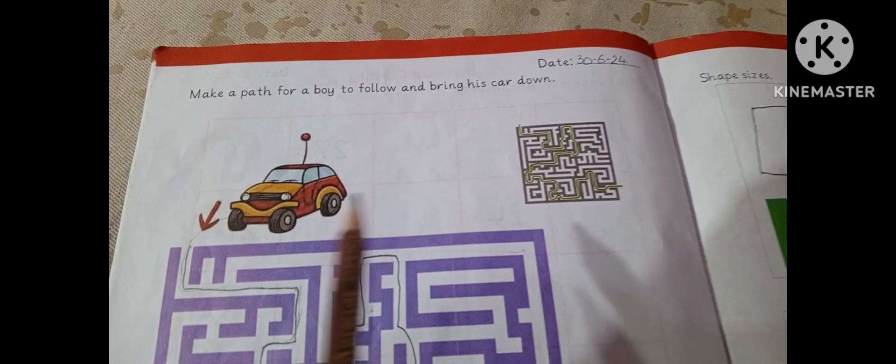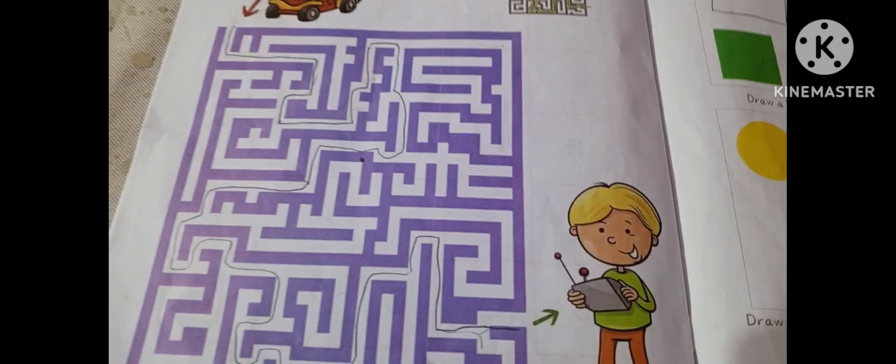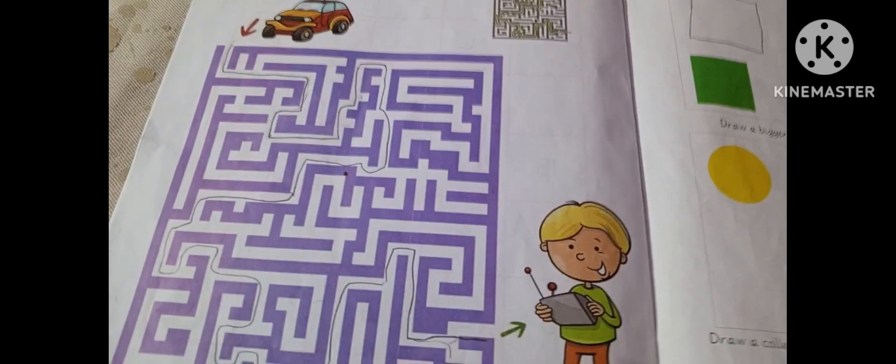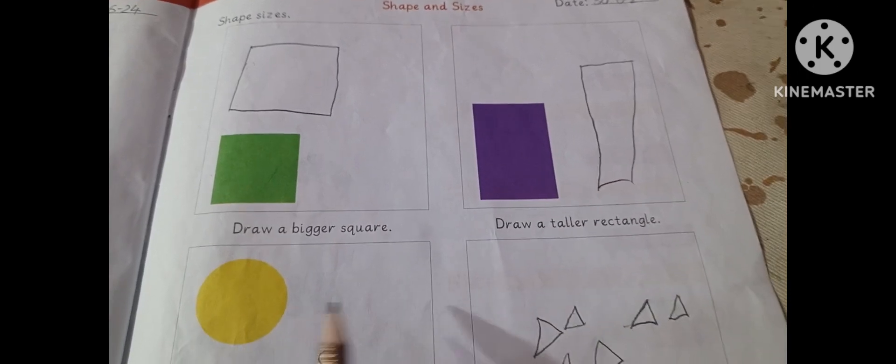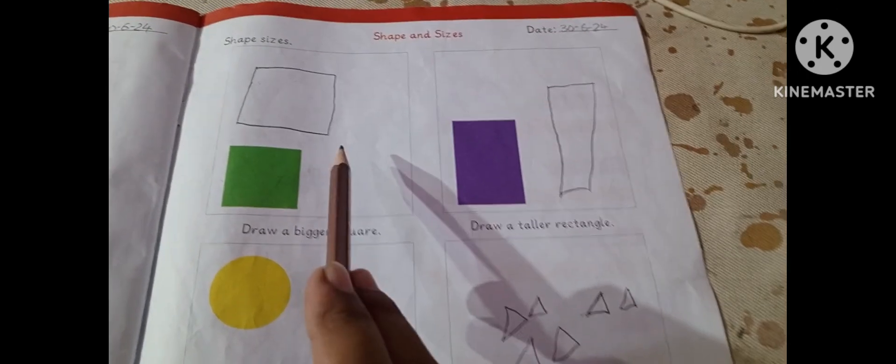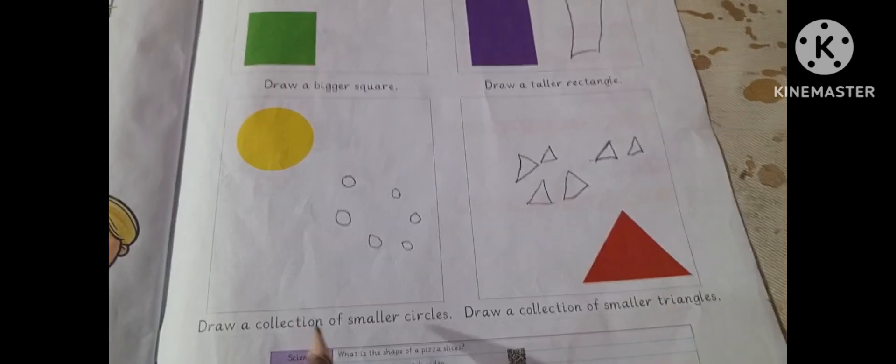Match a path for a boy to follow and bring his car down. Draw a bigger square, draw a taller rectangle.